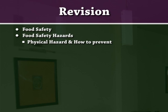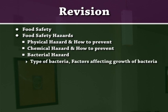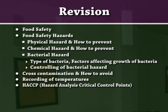Let us revise what we have learnt in today's session: food safety, food safety hazards, physical hazard and how to prevent it, chemical hazard and how to prevent it, bacterial hazard including types of bacteria, factors affecting growth of bacteria, and controlling bacterial hazard, cross-contamination and how to avoid it, recording of temperatures, HACCP (hazard analysis critical control points), and flow of food from purchasing to serving.